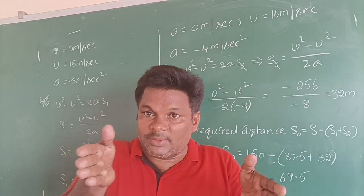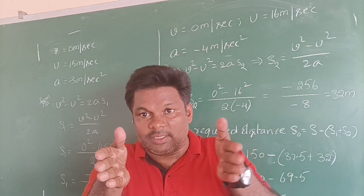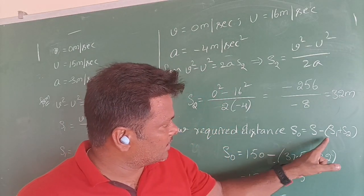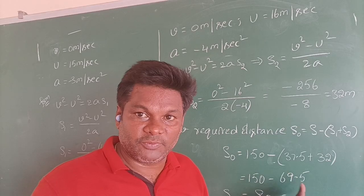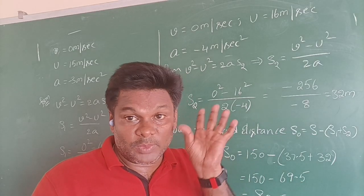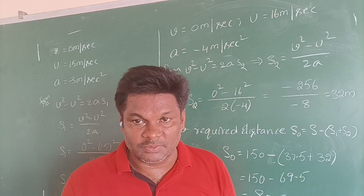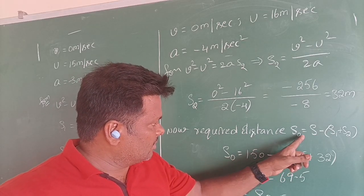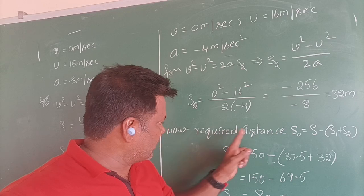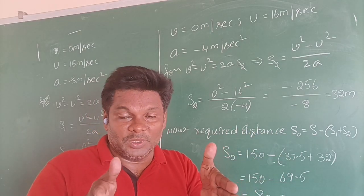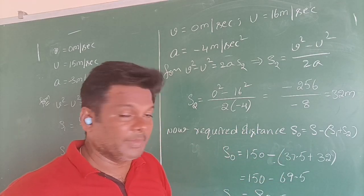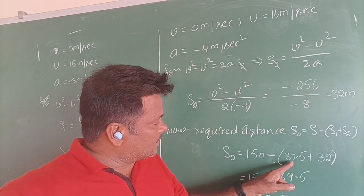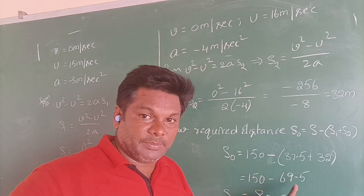Once this covers 37.5 and this covers 32, the total distance covered by these two is equal to S1 plus S2, that is nothing but 69.5. How much distance left between these two? The total distance is equal to 150, that is taken as S. And S0 is the required distance. That means how much distance between them is remaining to cover. 150 minus 37.5 plus 32, and you will get 69.5.